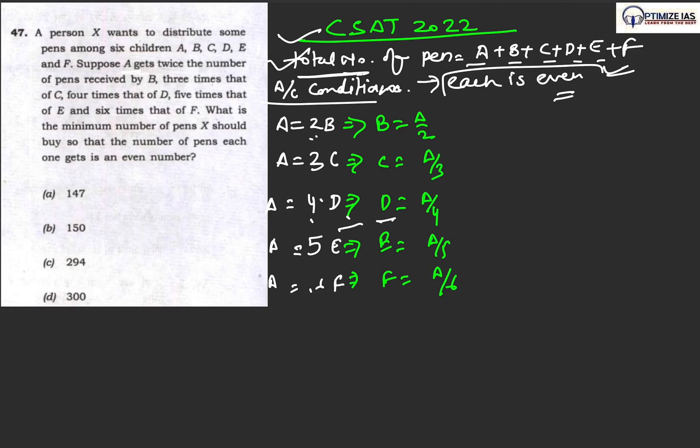The second condition is that each one is having even number of pens. By applying this condition from here, A gets twice the number of pens received by B, so A equals 2B. Similarly, A equals 3C, A equals 4D, A equals 5E, A equals 6F. And similarly we can make B equals A by 2, C equals A by 3, D equals A by 4, E equals A by 5, and F equals A by 6.